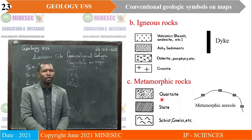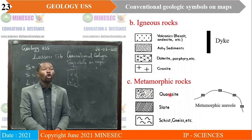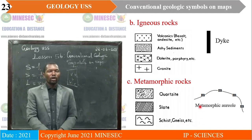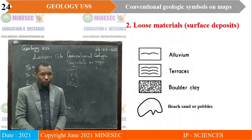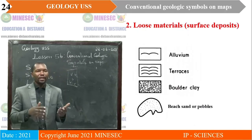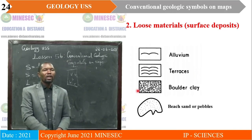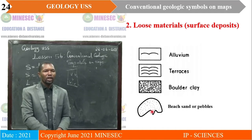For metamorphic rocks: one symbol represents quartzite — specifically meta-quartzite when related to metamorphics, distinct from orthoquartzite which is sedimentary. Another symbol indicates slates, and another indicates schist. A trace with M's indicates the metamorphic aureole. For loose materials or surface deposits: one symbol indicates alluvium (river deposits); another indicates talus (related to mass wasting or landslides); another indicates boulder clay from glacial deposits; and another represents beach sand or pebbles from wave deposits.